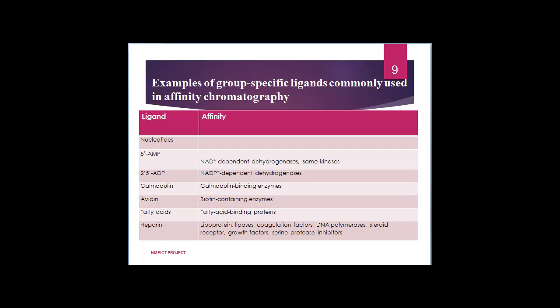Different types of ligands used in affinity chromatography include nucleotides. For example, Cy-AMP can be used for separation of NAD⁺-dependent dehydrogenases and some kinases. 2′,5′-ADP can be used for separation of NADP⁺-dependent dehydrogenases. Calmodulin ligand can be used for separation of calmodulin-binding enzymes, that is, calcium-binding enzymes. Avidin can be used for biotin-containing enzymes. Fatty acids can be used for fatty acid-binding proteins. Heparin can be used for separation of lipoproteins, lipase, coagulation factors, DNA polymerase, steroid receptors, and growth factors, as well as serine protease inhibitors.